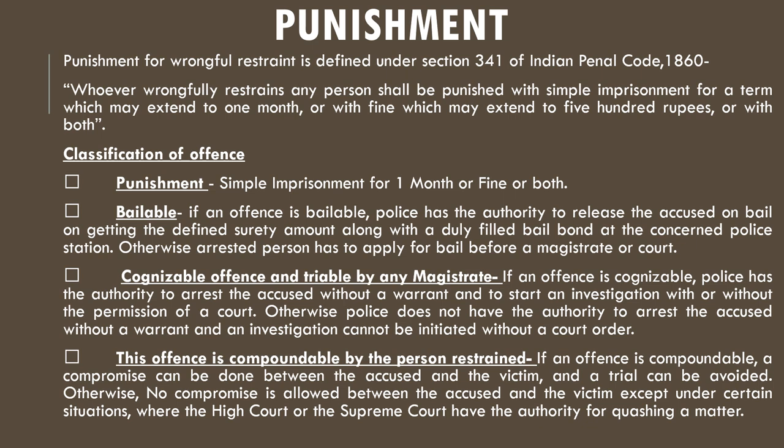Compoundable means a compromise can be done between the accused and the victim and a trial can be avoided. Otherwise, no compromise is allowed between the accused and the victim, except under certain situations where the High Court or Supreme Court have the authority for quashing a matter.